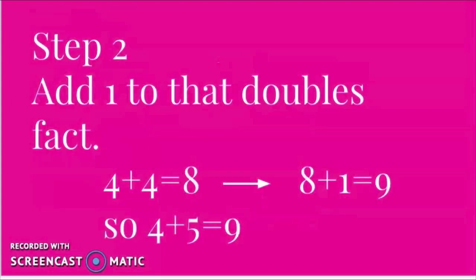Then the last step, or the second step, is you just need to add one to that doubles fact. So remember I had eight, and then I just think one more. Eight plus one is nine, and that's my answer. So four plus five makes nine.